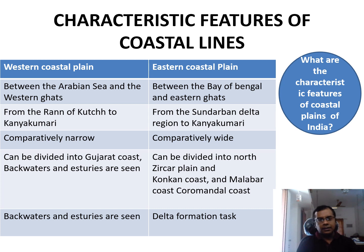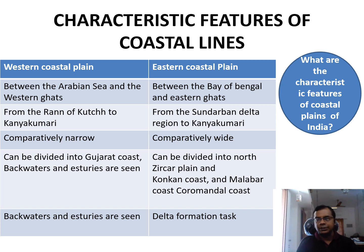As far as Eastern Coast Plains are concerned, they are located between the Bay of Bengal and the Eastern Ghats. The Western Coast Plains extend from the Rann of Kutch to Kanyakumari, whereas the Eastern Coast Plains are located from the Sundarban Delta region to Kanyakumari.